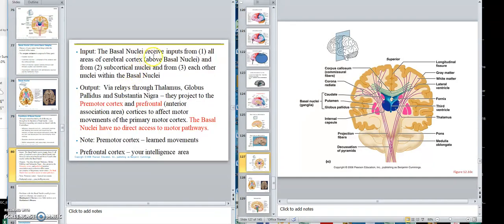The basal nuclei receive inputs from all the areas of the cerebral cortex above the basal nuclei and from subcortical, those underneath. They output is related through the thalamus, globus, pattern, substantial. They project to the premotor. So they control a lot of stuff, this basal. This is what gives you, it inhibits your antagonistic muscles, activates your agonistic muscles, so you don't shake.